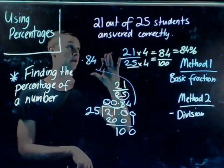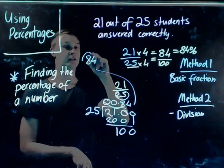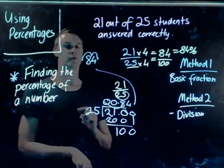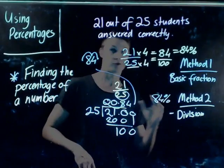So if I bring this up here, I have 0.84. Now I know if I want to turn that into a percentage, I multiply that by 100. The decimal place moves two spots to the right, which gives me 84%.